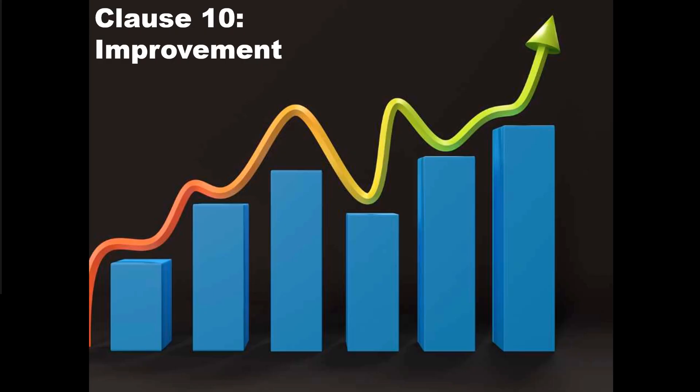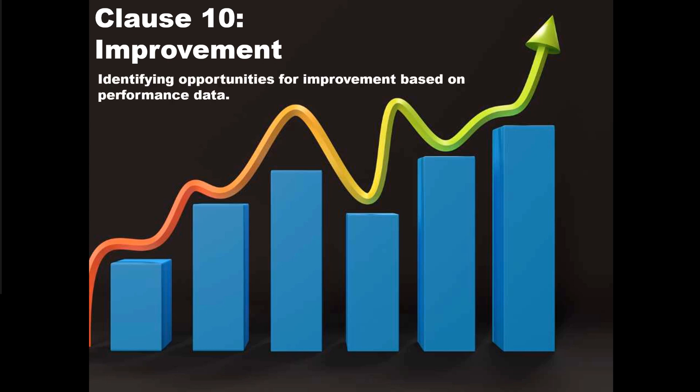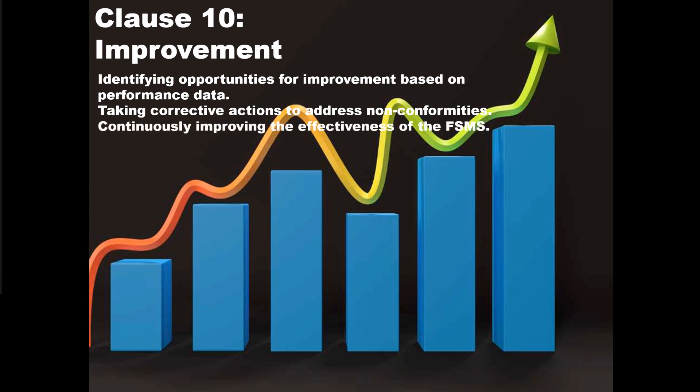Clause 10 is about improvement. Are you identifying opportunities for improvement based on performance data? For example, if your internal audits are finding problems around incorrect gowning procedures, that's an opportunity for improvement — perhaps the hair nets are ripping more frequently and you need a new supplier. Are you reviewing data at management reviews and taking corrective actions where there are issues? All of those things need to be covered to be in compliance with clause 10 of ISO 22000.